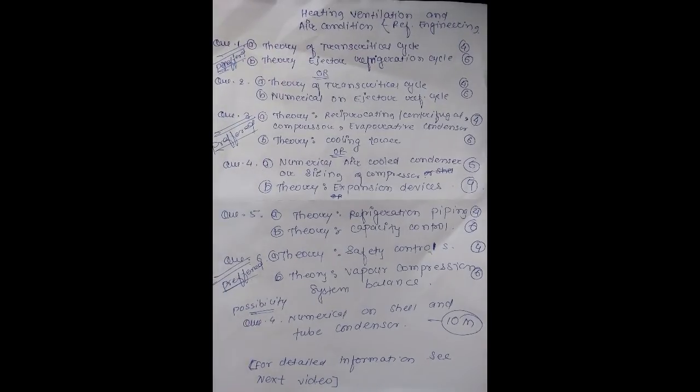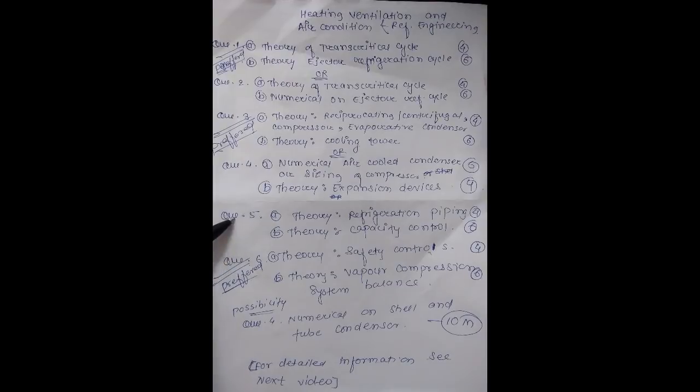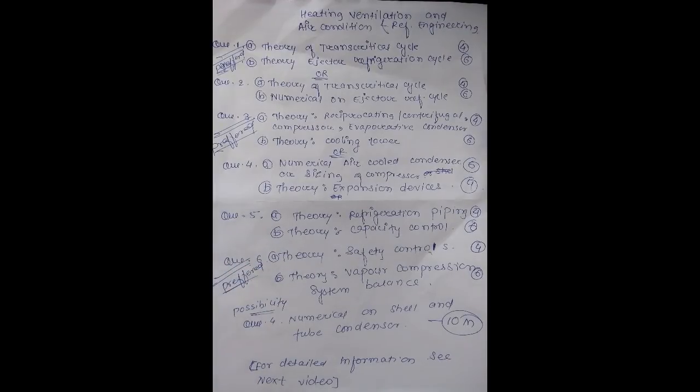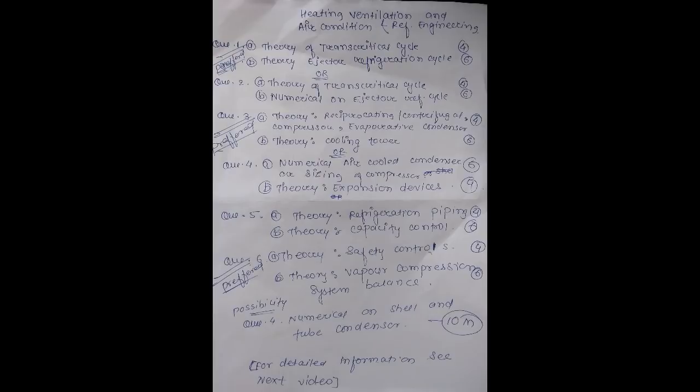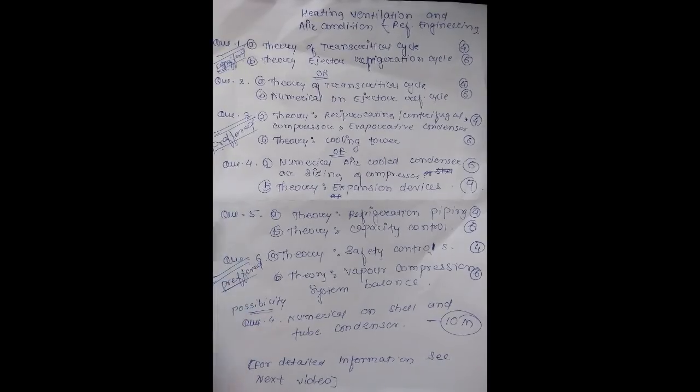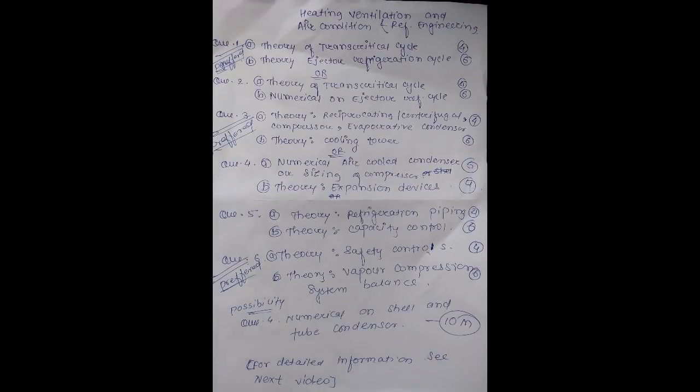Question number 4, unit number 3 total theory. Question number 5A and B - theory on refrigeration piping and capacity control, various capacity controls of centrifugal and reciprocating compressors. Question number 6A - safety controls with lag diagram and explanation. Question number 6B - theory on vapor compression system balance. Question number 6 preferred, better. Question number 1 preferred, question number 3 or 4, and question number 6. It's all about HVAC.